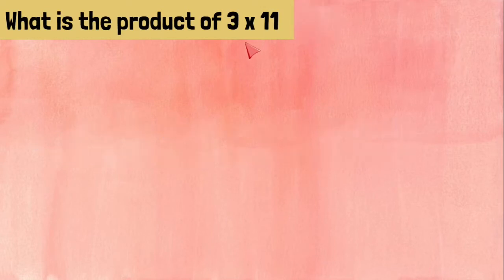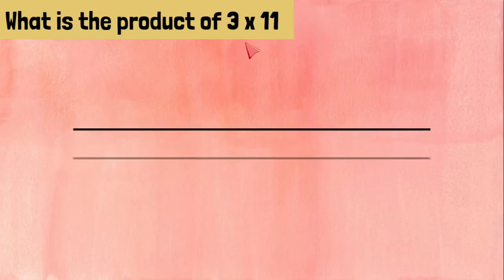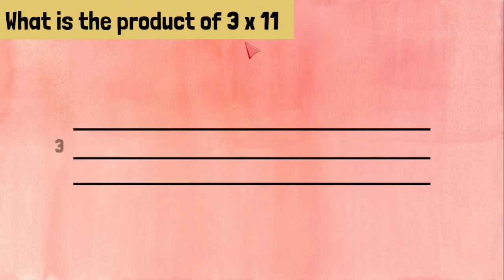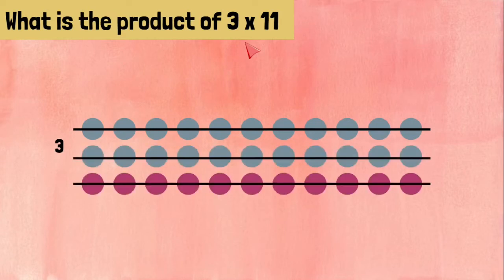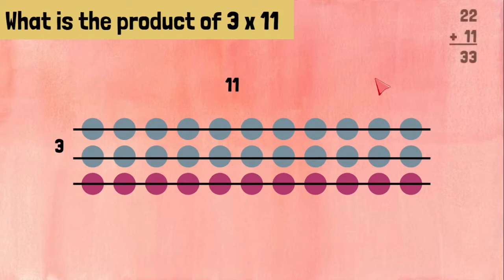3 times 11 means three rows with 11 on each row. Now we can do 22 plus 11 more, which gives us 33. 3 times 11 equals 33.